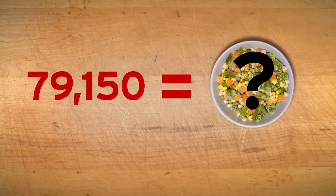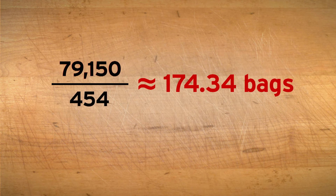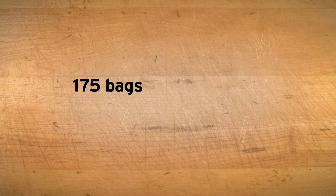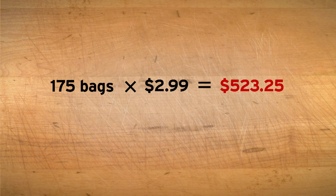But how many bags is that? We can divide that amount by 454 grams to find out — we get just over 174 bags. Since we can't buy part of a bag and don't want to run short, let's round up to 175 bags. Each bag was $2.99, so serving frozen vegetables to 500 people would cost about $523.